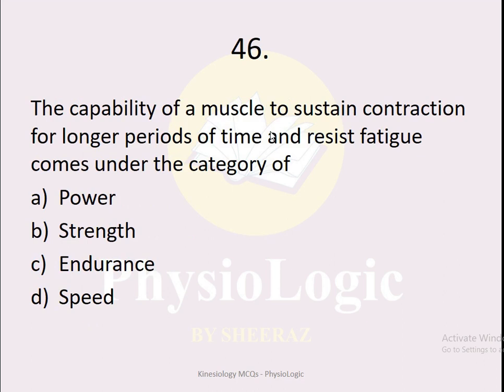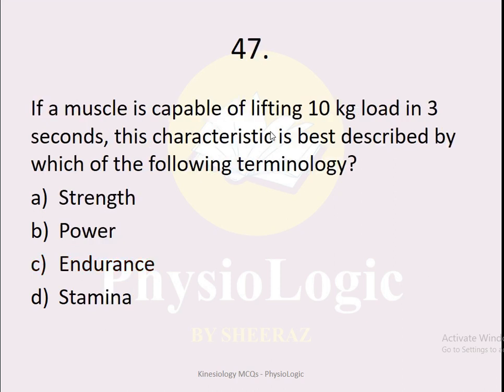MCQ number 46: The capability of a muscle to sustain contraction for a longer period of time and resist fatigue comes under the category of — option A power, option B strength, option C endurance, option D speed. The correct option is option C, endurance. If a muscle is capable of sustaining contraction for a longer period of time and can resist fatigue, we say the muscle has high endurance.